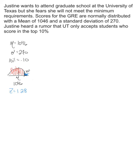Now we can do our calculations. Our Z formula, if we were trying to find Z, would be X minus mu divided by standard deviation — but we already have Z. We're trying to find the raw score, so we use: X equals mu plus standard deviation times Z.